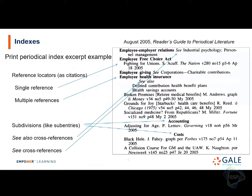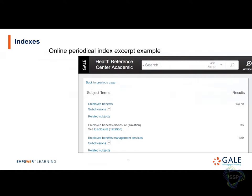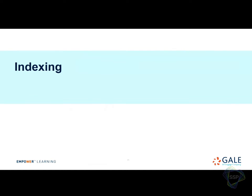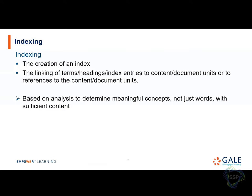Nowadays we go to online indexes. An example from Gale shows that you do have subdivisions, but the user clicks a button to get the list. There are 'see also' references — called 'related subjects' — and 'see' cross references, so still many features from a traditional index. Moving on to indexing: that's creating an index and linking topics to index entries, based on analysis of meaningful concepts, not just words — we're getting the ideas, not simply pulling words out like a search engine.